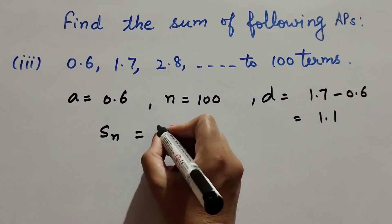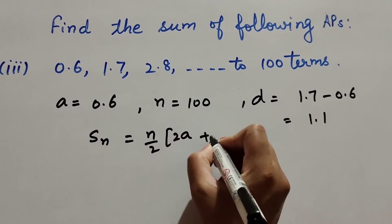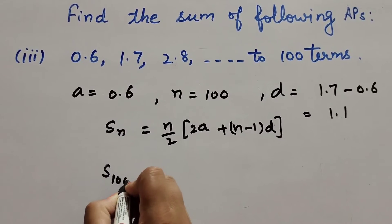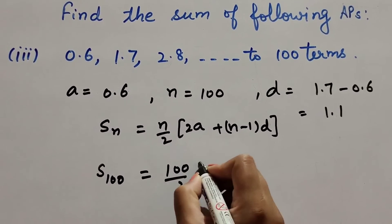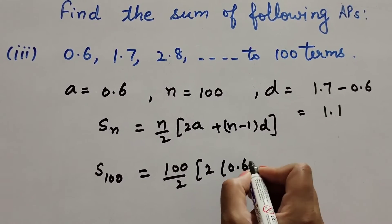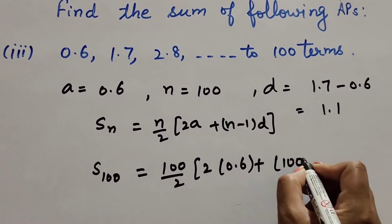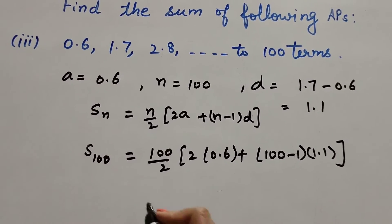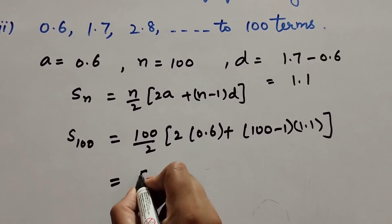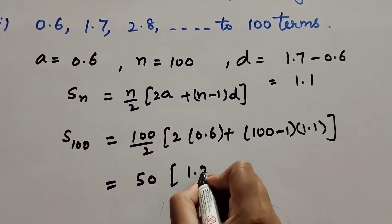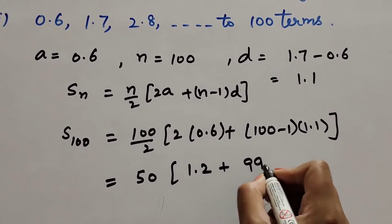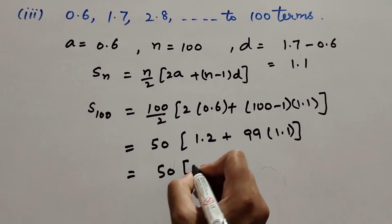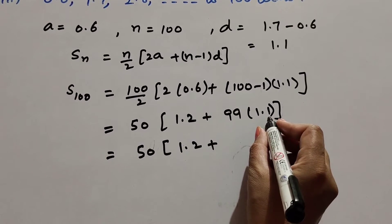We use the formula Sₙ = n/2 × (2a + (n−1) × d). With n = 100: S₁₀₀ = 100/2 × (2×0.6 + (100−1)×1.1) = 50 × (1.2 + 99×1.1) = 50 × (1.2 + 108.9) = 50 × 110.1.